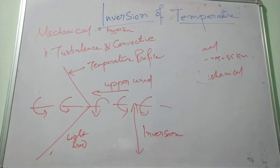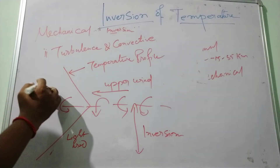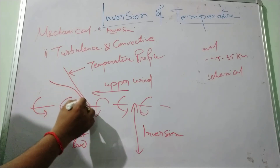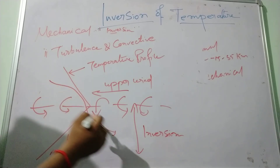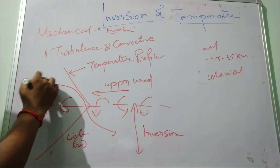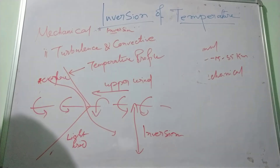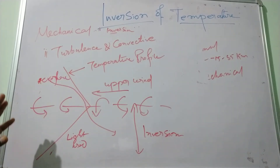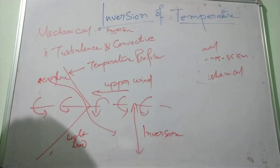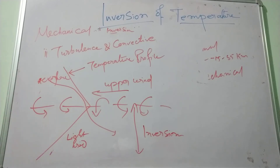In this turbulence layer, there is a vertical mixing that carries heat downward and cools the upper part of the layer, which causes turbulence in conductive inversion.